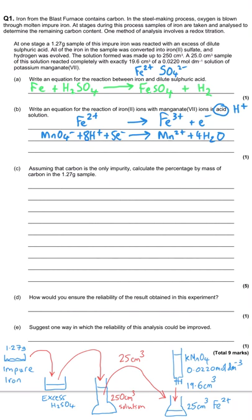Now we combine the half equations and cancel the electrons. The iron half equation shows only one electron lost, but the manganate equation shows five electrons gained, so we multiply the iron equation through by 5 and add them together. The overall equation is: MnO₄⁻ + 8H⁺ + 5Fe²⁺ → Mn²⁺ + 4H₂O + 5Fe³⁺. That's the one mark for part b.